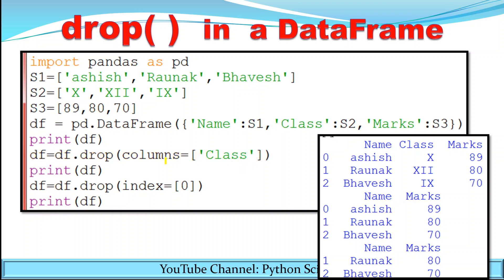Now I want to delete a row — specifically the 0th index row, which contains values like r6, 89, 8. Using axis method: df = df.drop([0], axis=0). The row is deleted but won't display until we print. Using the index method: df = df.drop(index=[0]). After printing, only two rows with index 1 and 2 remain — the 0th row is removed. This is how you use drop for both row and column deletion.